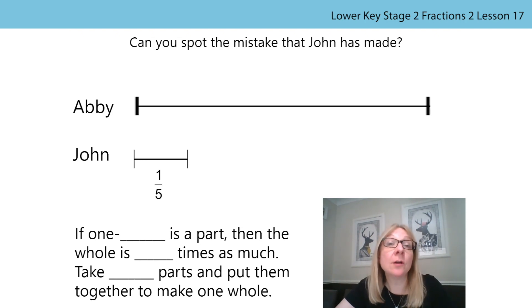I wonder if you can help find John's mistake with this question. John and Abby went for a run. The whole distance that Abby ran is represented in the top line. We are also given one-fifth of the amount of the distance that John ran. John completed his line like this and he says that he ran further than Abby. What mistake has John made? You might like to use the stem sentences on the screen to help you explain. Pause the video now and if you can tell someone else in the house the mistake that John has made and what he needs to do to correct it.